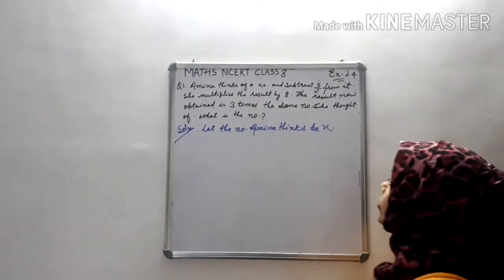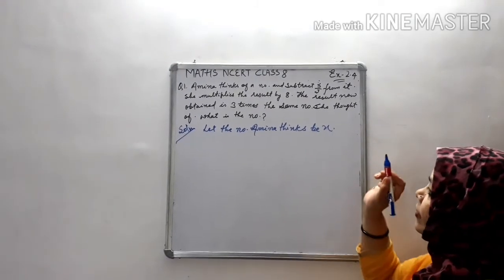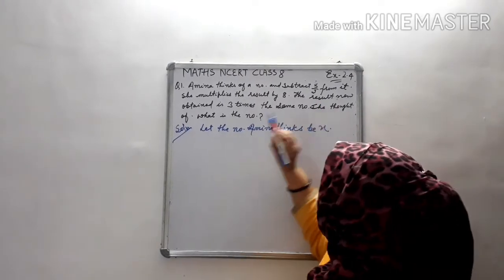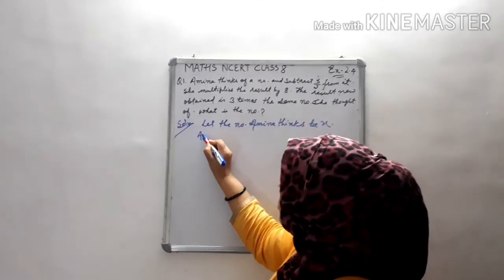Let the number Amina thinks be x. We suppose the number is x. Then, as per the condition, we subtract 5/2 from it.